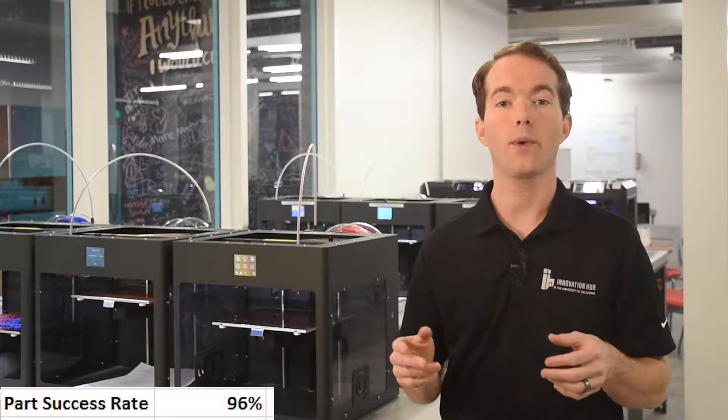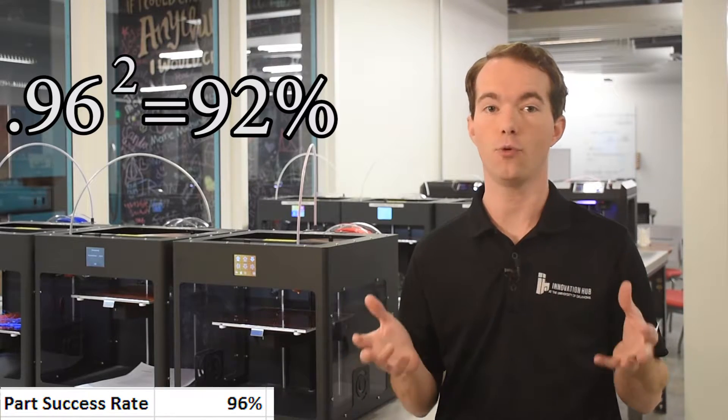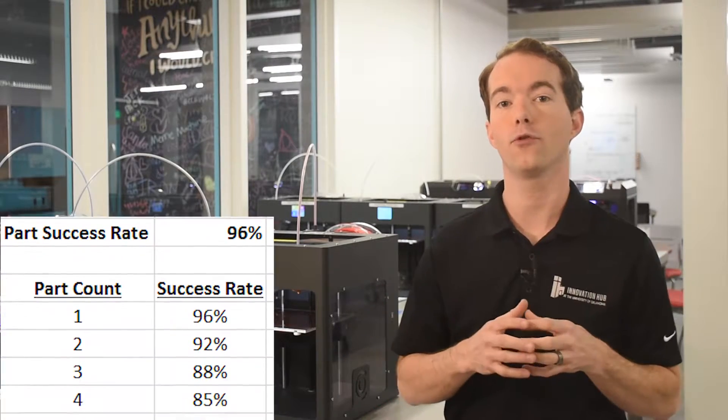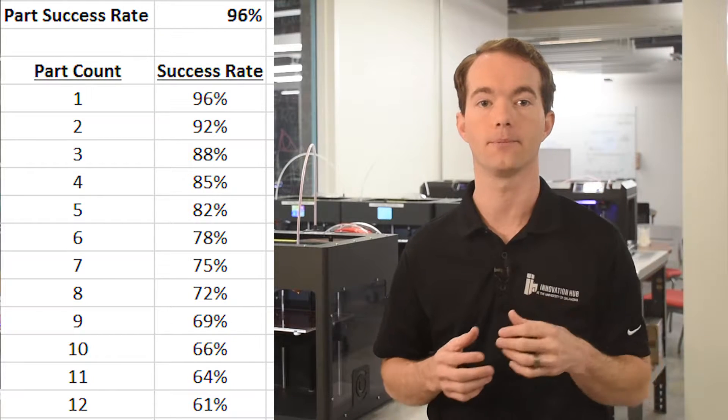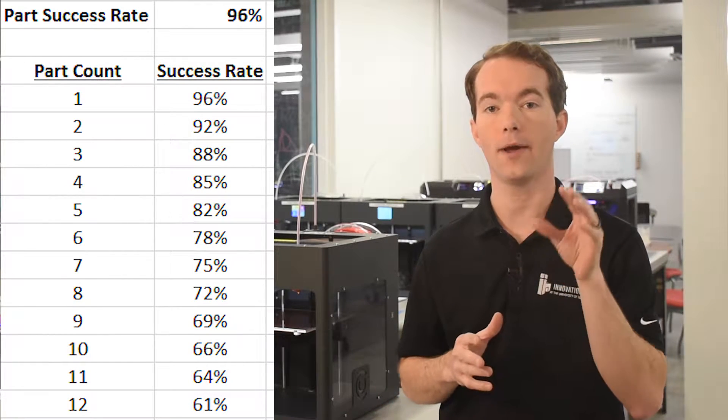For our two-part example, we have .96 squared, which is only 92%. This table shows you just what happens as the part count goes up. This is why I recommend one part at a time.